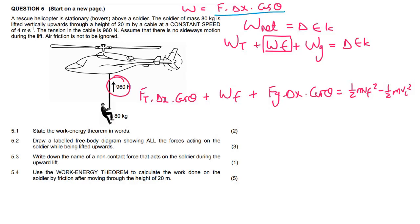Now we just fill everything in. The tension force is 960. The distance is 20. This man is moving upwards, and tension is also going upwards. So that'll be cos 0, plus the work due to friction, plus gravity, which is 80 multiplied by 9.8, multiplied by the distance. He's moving upwards, but gravity acts downwards, so that's going to be cos 180.